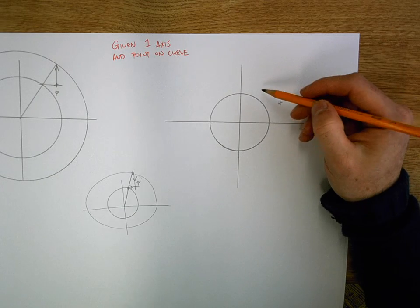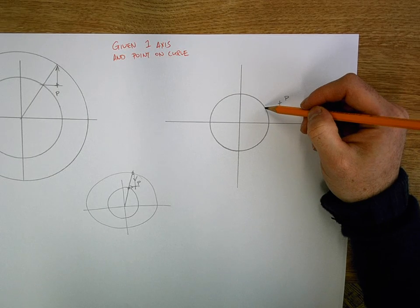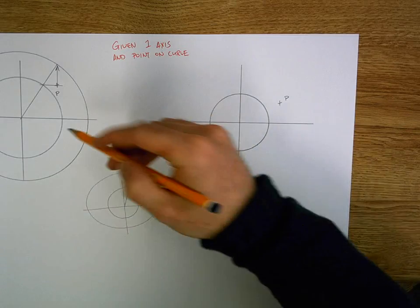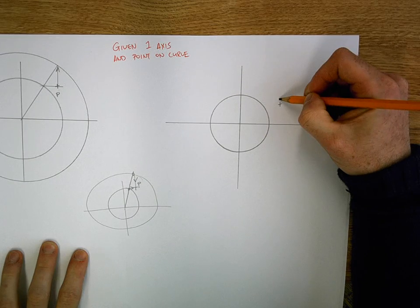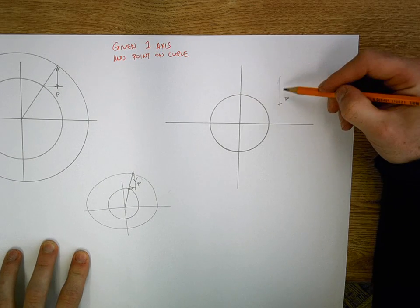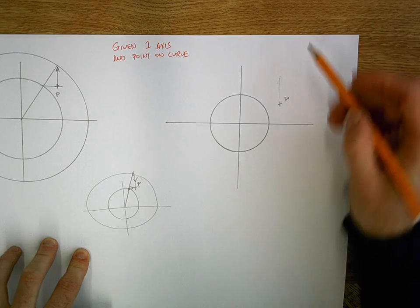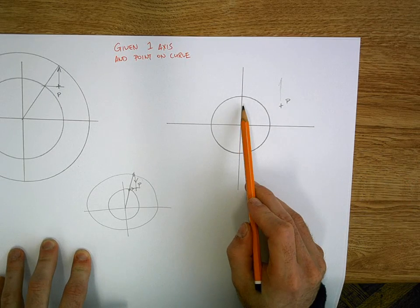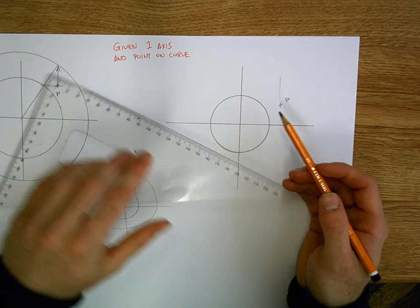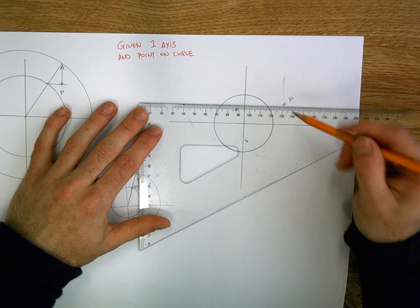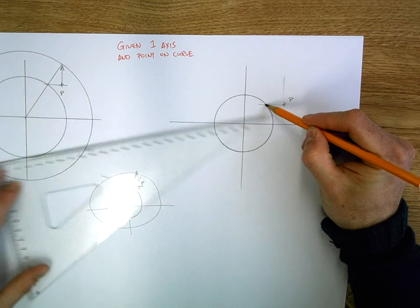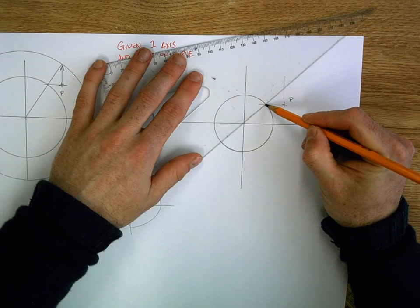So this time we're looking at point P and the minor circle. Now in the previous example, what we did was we brought a line straight up, but we can't do that because we don't have anywhere to stop it. So this time we're going to bring it across first. We're going to draw a horizontal line. It's going to cut the minor circle. And we join that through the center point.